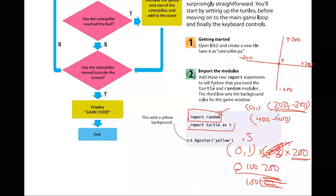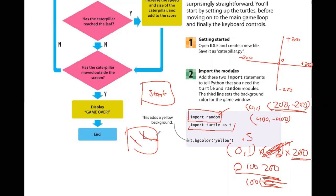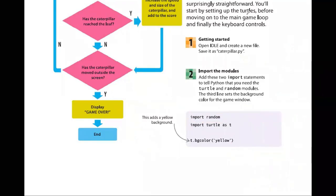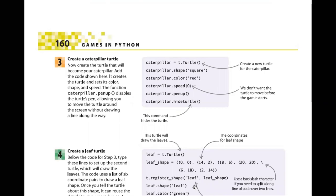The reason for the yellow background: when the game ends, we convert the color of all items — caterpillar, leaf, and score — to yellow, making them invisible against the background. They're still there but can't be seen. You can change this to whatever color fits your game's theme.